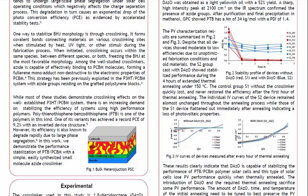Polythienothiophene-benzodithiophene (PTB) is one of the polymers in this kind. One of its variants has achieved a record PCE of 9.2% with an inverted device structure. However, its efficiency is also known to degrade rapidly due to large phase segregation.